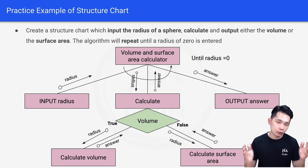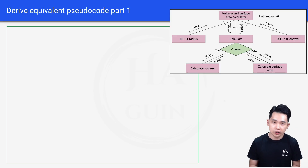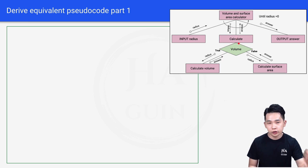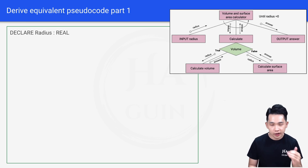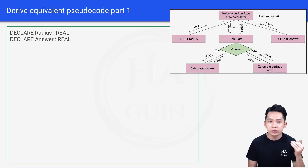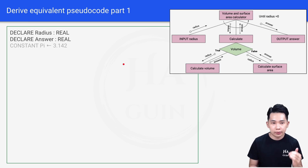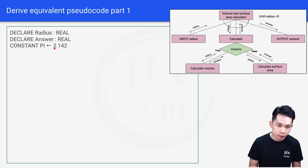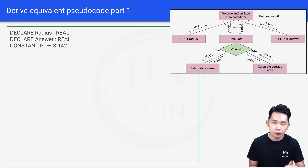Now let's look at how we can convert this structured chart into pseudocode. I have the structured chart on the right so we can refer back to it as we go. The first line will be: declare radius as real, since radius can be decimal. Next, declare answer as real, since the answer can be decimal as well. And next: constant pi = 3.142. This assigns 3.142 into a constant variable called pi, meaning its value will never change.